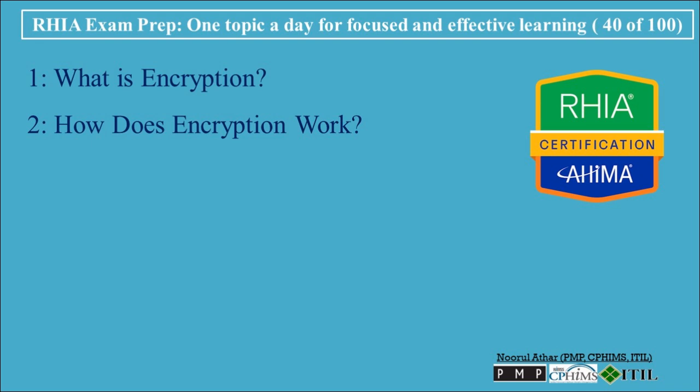How does encryption work? Encryption relies on cryptographic algorithms that convert plaintext data — information that is readable — into ciphertext, which is unreadable unless decrypted. To decrypt the data and turn it back into its original form, a key is needed.